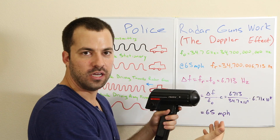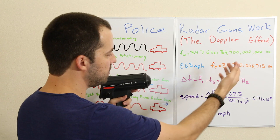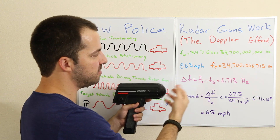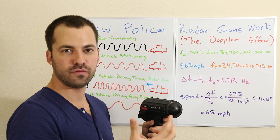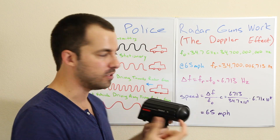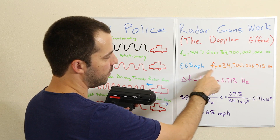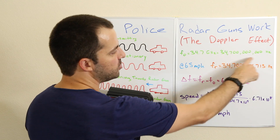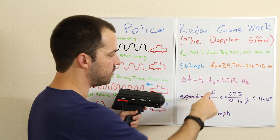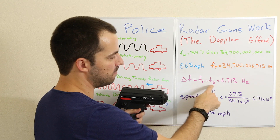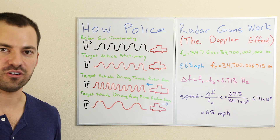This right here is going to be the change in frequency that's due to the movement of the vehicle, not the radar gun. So what we can do is basically calculate that — that's what the radar gun is looking at. It wants to know the change in frequency due to the movement of the vehicle. So the change in frequency is the difference between the reflected frequency and the original frequency: reflected frequency minus original frequency equals 6,713 Hz.